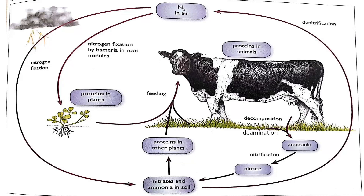The key points in the nitrogen cycle are: decomposition of plant and animal protein to ammonium ions and nitrification; nitrogen fixation by lightning and bacteria causing nitrogen gas to combine with O₂ to form nitrogen oxide; absorption of nitrate ions by plants; production of amino acids and protein; feeding and digestion of protein; and finally deamination and denitrification.